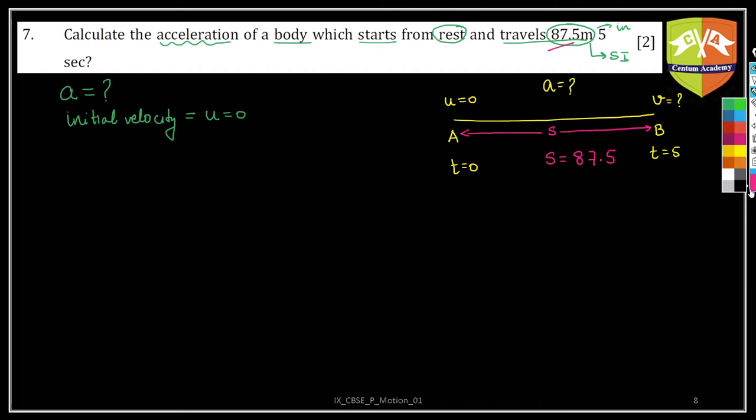Now let's go back to our calculation. Initial velocity is zero, t is equal to five seconds, and s is equal to 87.5 meters.